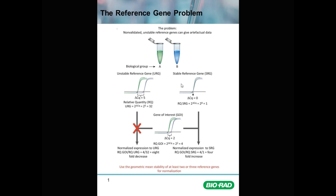Whereas if you're working with a stable reference gene, ideally the delta CQ between the control and treatment groups would be very low. In the best case scenario, presuming that the RNA samples have been assessed to be the same concentration and therefore the cDNA samples are the same concentration, a perfect reference gene would give a delta CQ of zero — literally no change between control and treated. Two to the power of zero is one, so the unstable reference gene gives a 32-fold difference while the stable reference gene gives a one-fold, essentially no difference.